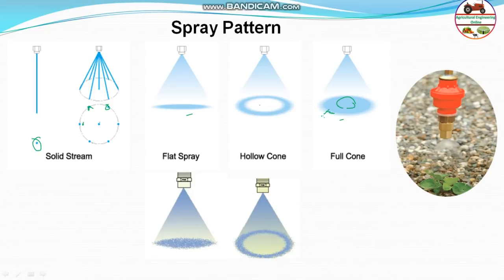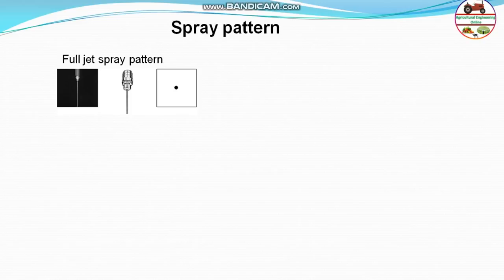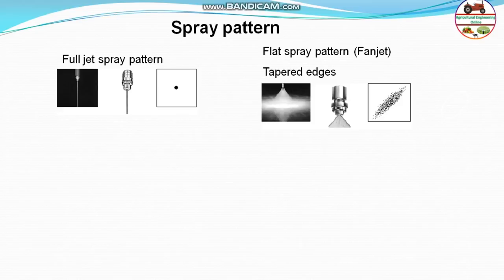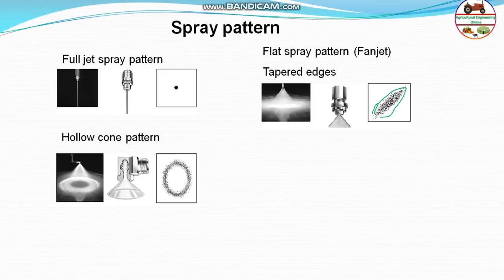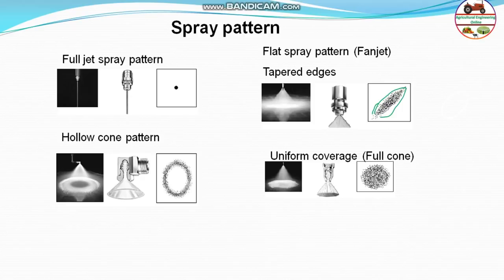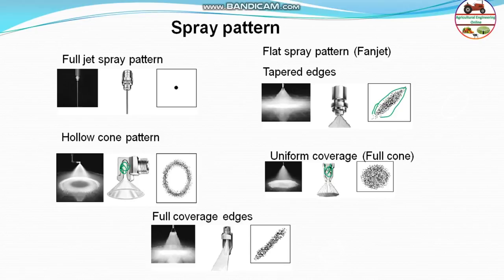Full jet spray produces a solid stream. Flat spray pattern is like a flat or helical structure. Hollow cone has no spray in the middle. Full cone provides the most uniform coverage. These patterns are generated by the shape of the orifice and the swirl plate inside the nozzle, and also depend on pressure. An edge-type orifice on the side of the nozzle produces a line or band pattern useful for reaching corners that other patterns cannot.